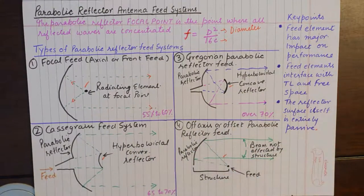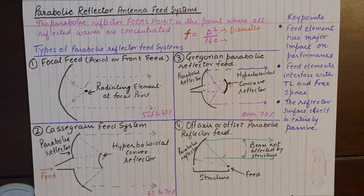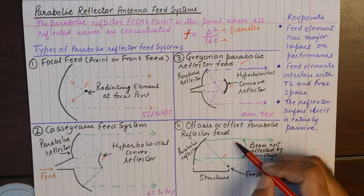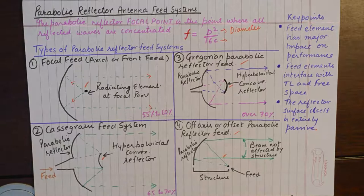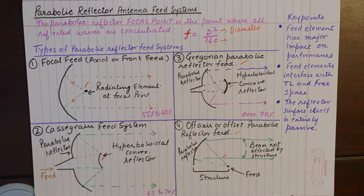To name the four feed systems: they are the focal feed system, also known as axial or front feed; the Cassegrain feed system; the Gregorian parabolic reflector feed; and the off-axis or offset parabolic reflector feed. Diagrams for all the feed systems are drawn and I'm going to explain these one by one, mentioning their features, advantages, and disadvantages.